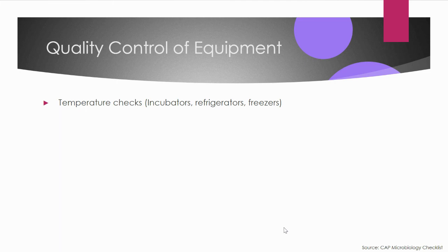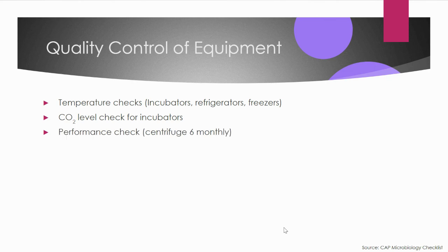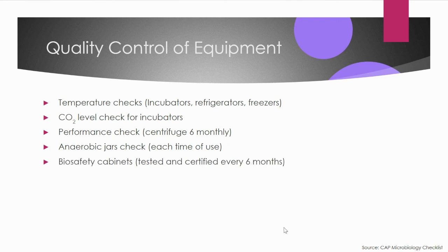For equipment quality control, temperature checks are required for incubators, refrigerators, and freezers. CO2 levels in incubators should be checked periodically. Centrifuge performance should be verified every six months. Anaerobic jars must be checked every time they are used to ensure proper ring and sealing, and QC for anaerobic organisms should confirm growth or a chemical indicator should confirm anaerobic conditions were met during incubation. Biosafety cabinets must be tested and certified every six months.